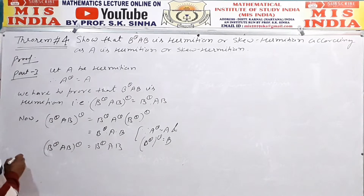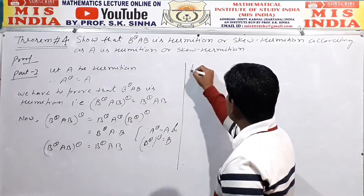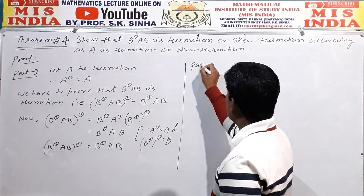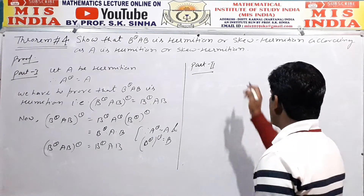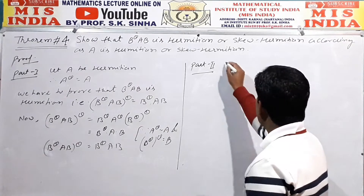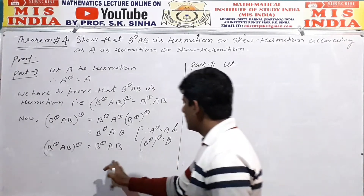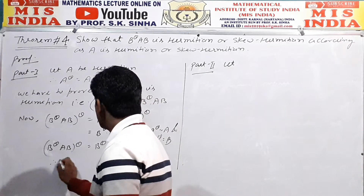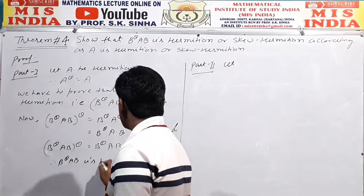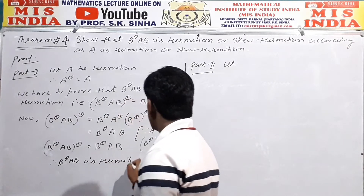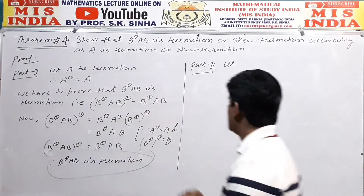This is part one. Therefore, B raised to power theta, A, B is Hermitian. This is proven.